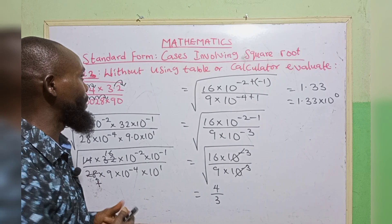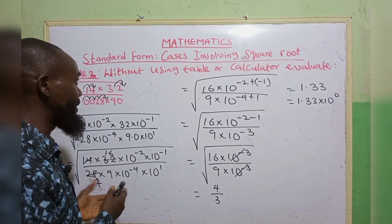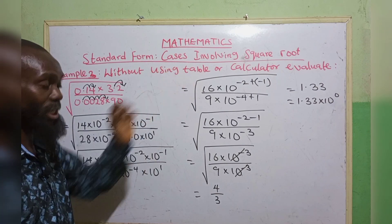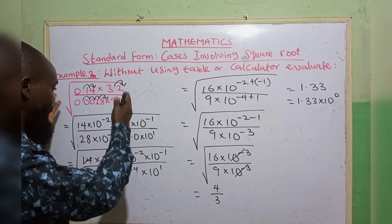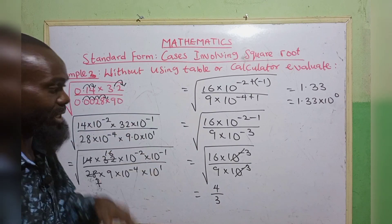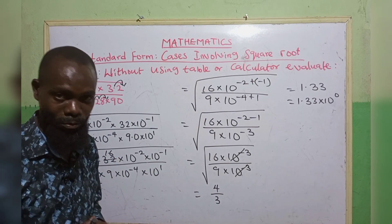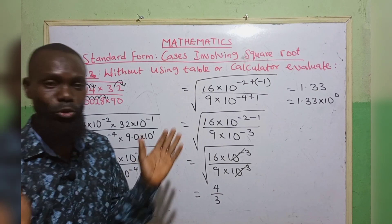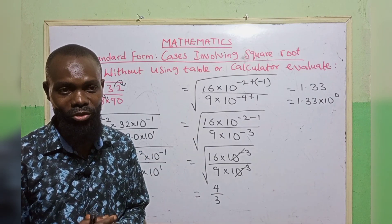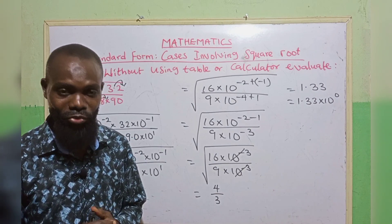This is how to apply standard form in solving cases involving square roots, both with and without using a mathematical table or calculator. Don't forget, when working, always keep the square root alongside your expression until you have found the square root of those numbers. If you have any questions, kindly put them in the comment section below. Thank you very much.